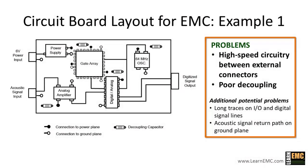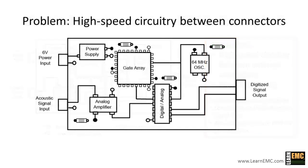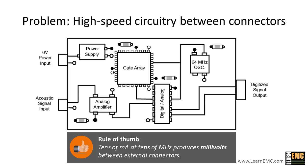Let's look at each of these problems in a little more detail so that we can determine a better way to lay out this board. Let's start with the problem of the placement of the high-speed circuitry between external connectors. This layout will cause a voltage difference between the connectors on opposite sides of the board. As a general guideline, if the circuitry between connectors has signals at tens of milliamps operating at frequencies of tens of megahertz, then that will produce millivolts between external connectors. The cables attached to the external connectors can behave as antenna parts, so millivolts of potential difference can cause one cable to be driven relative to another cable at a level that can easily exceed radiated emissions requirements.